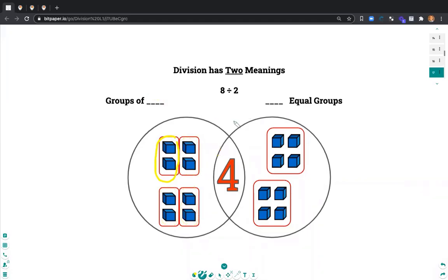I can also make 2 equal groups. 1 group, 2 groups. Again, here in each group I have 4. My quotient is 4. Notice how these two pictures look different. So when we talk about division, we could be referring to making groups of a quantity or such and so and so equal groups.